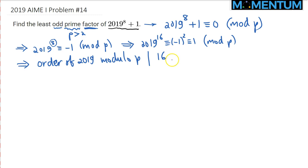And yet, 2019 raised to the 8th power is not congruent to 1. So combining these two, this implies the order of 2019 modulo P is simply equal to 16.